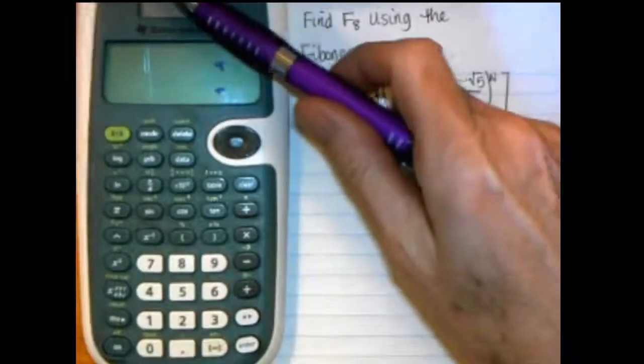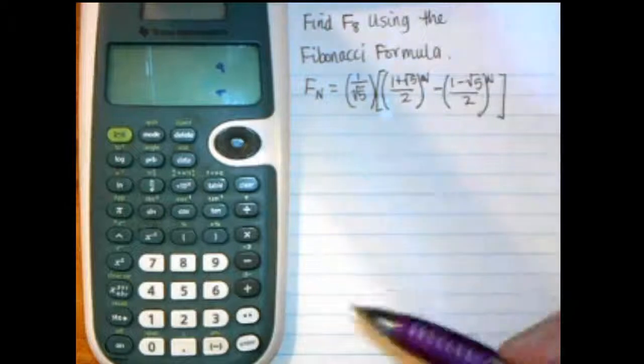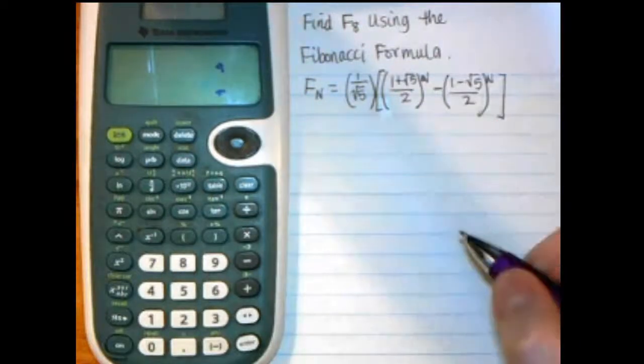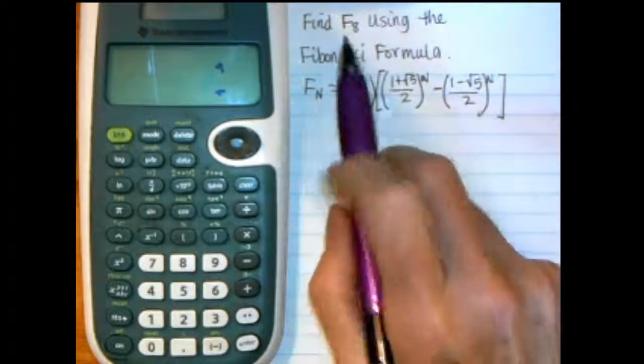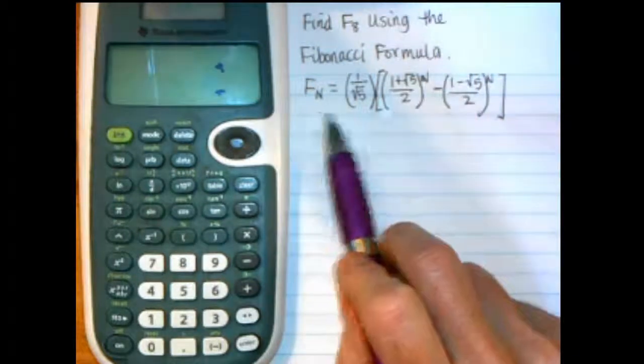Here's how to use the TI-30XS multi-view to do the Fibonacci formula. So we want to find F sub 8 using the Fibonacci formula, and here's the formula.